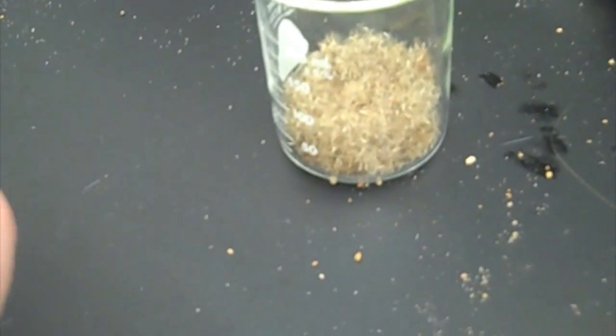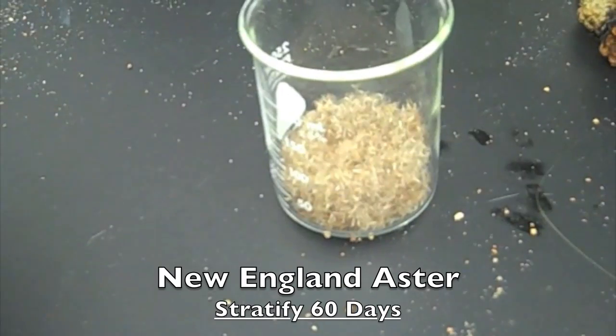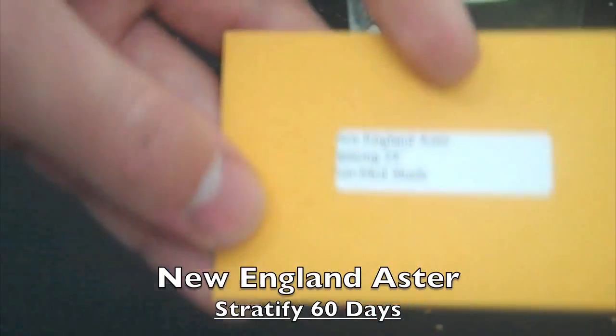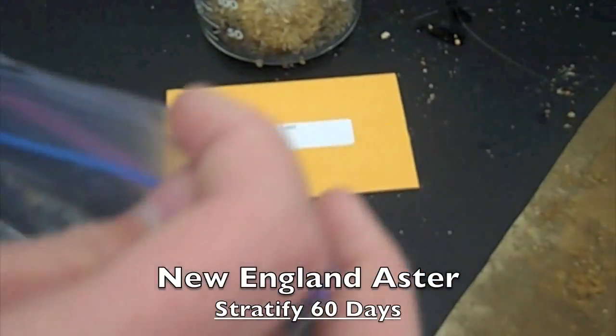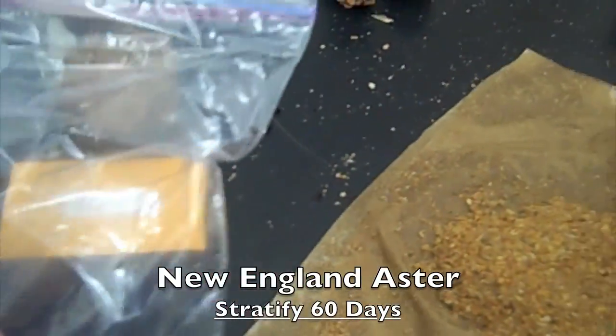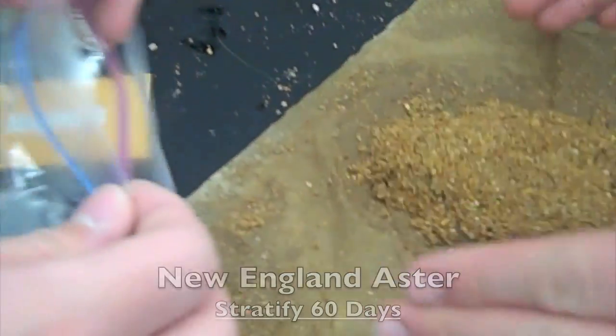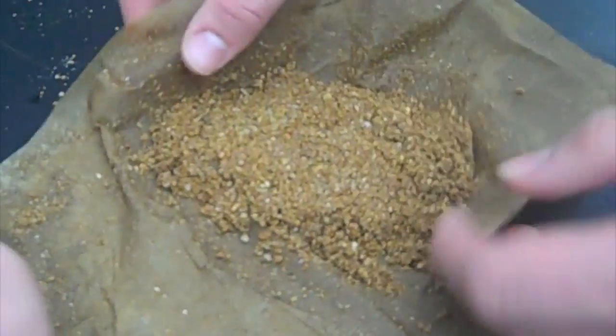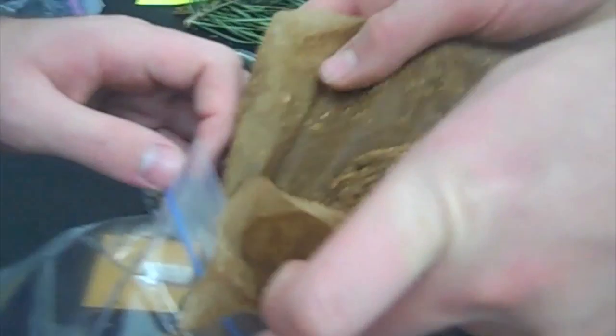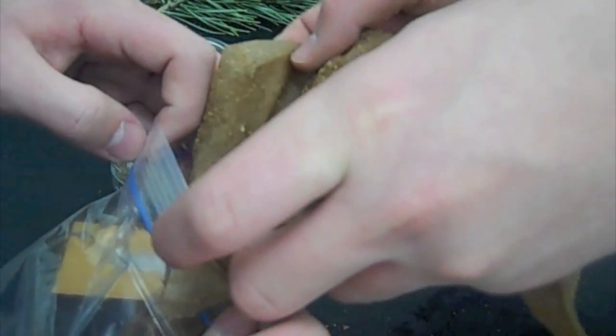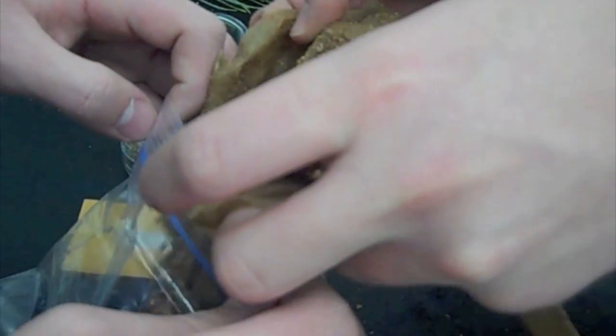The final seed that we need to stratify is the New England Aster, which you'll find in your orange envelope like so. And so we're going to do it the exact same way for 60 days. We're going to add our nice and moist sand, not wet, just moist. And we are going to label it with the date and the species, and then we're going to stick it in the refrigerator for 60 days.